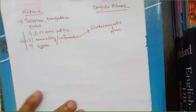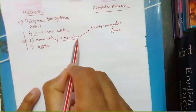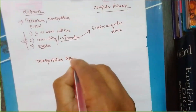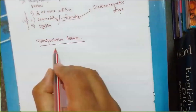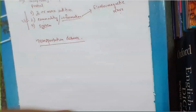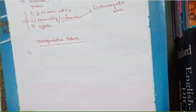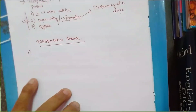So a computer network is a system that facilitates the exchange of information in the form of electromagnetic waves among two or more entities. Now let's think of the transportation network and compare its basic requirements with a computer network to understand the terminology used.